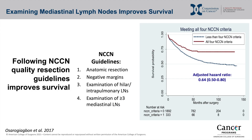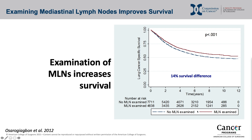A 2017 study examined the effect of standard-compliant lung resection on survival, specifically looking at the effect of complying with NCCN guidelines requiring: an anatomic resection, negative margins, examination of hilar or interpulmonary lymph nodes, and examination of at least three mediastinal lymph nodes. Compliance with these standards had a significant effect on survival, with an impressive hazard ratio of 0.64. A similar study showed a significant improvement in lung cancer-specific survival when mediastinal nodes were examined.